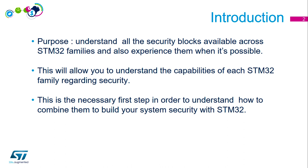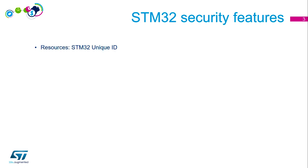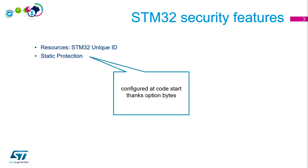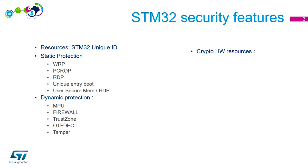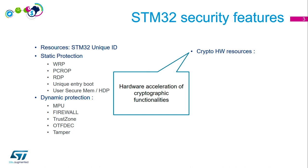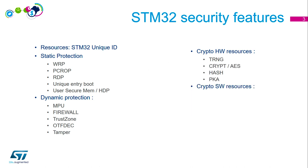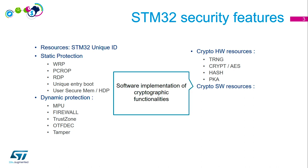Let's list all the features we'll see together. The first category is resources, specifically the STM32 unique ID. Then we have static protection — something already configured when your code starts, set via option bytes, so those protections are active before your firmware has started at all. Then we have dynamic protection, which is configured by the embedded software, meaning you activate the protection in your code when you need it. Finally, we have crypto hardware resources — hardware acceleration of cryptographic functionality — and crypto software resources, which are software implementations of cryptographic functionalities.